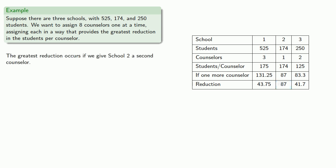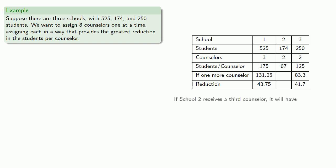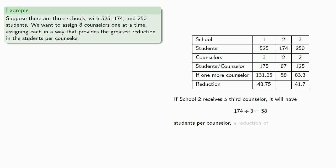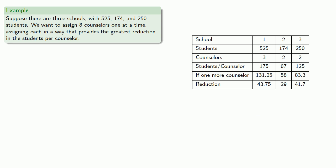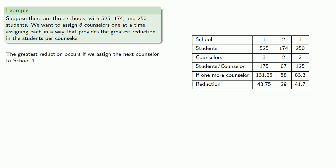Schools 1 and 3 haven't received a new counselor, so their situation remains unchanged, but we need to recompute the values for School 2, which now has two counselors. Running the scenario where it gets another counselor, we find the new values. There are eight counselors to distribute and we've distributed seven, so we have one more counselor to assign, and the greatest reduction will occur if we assign the next counselor to School 1.